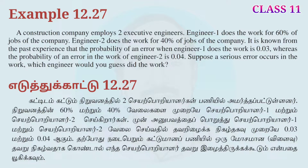This is a good question. The probability of an error is 0.03 for Engineer-1 and 0.04 for Engineer-2. The probability of a bigger error is 0.04. Engineer-1 does 60% of jobs and Engineer-2 does 40% of jobs with an error probability of 0.04.